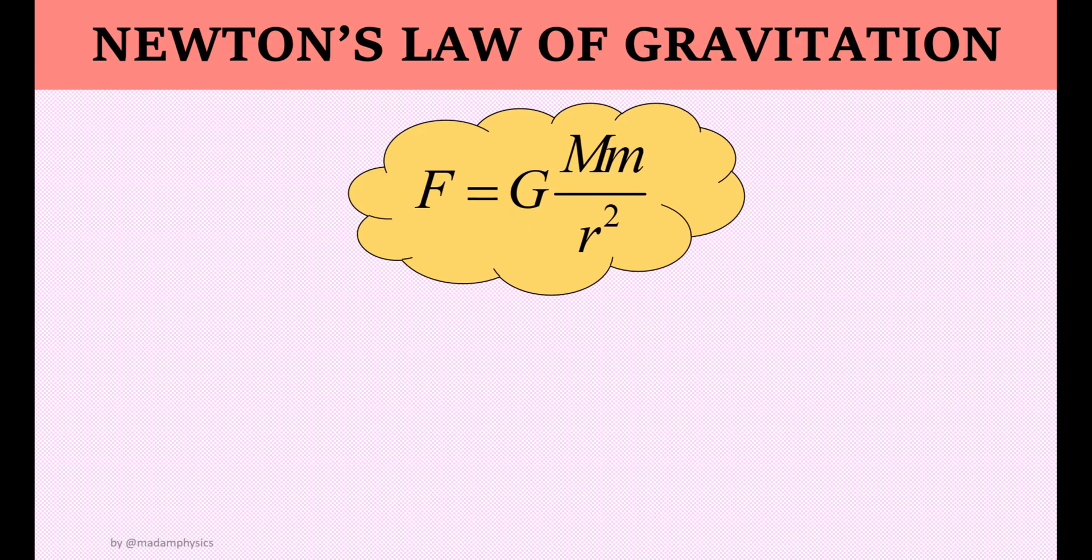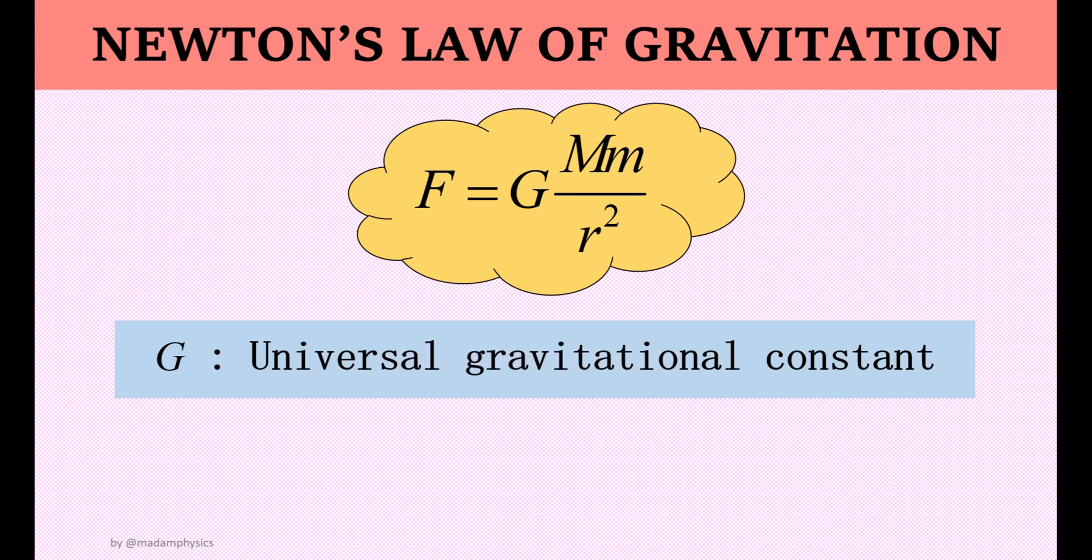Next, let's have a look at the constant G in Newton's Law formula. G here is the constant of proportionality and it's known as universal gravitational constant. It has a value approximately equal to 6.67 times 10 to the power of negative 11 and has a unit of Newton meter squared per kg squared.